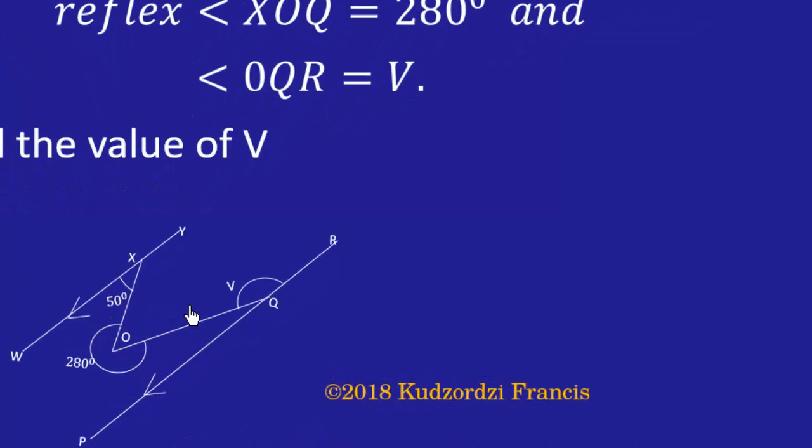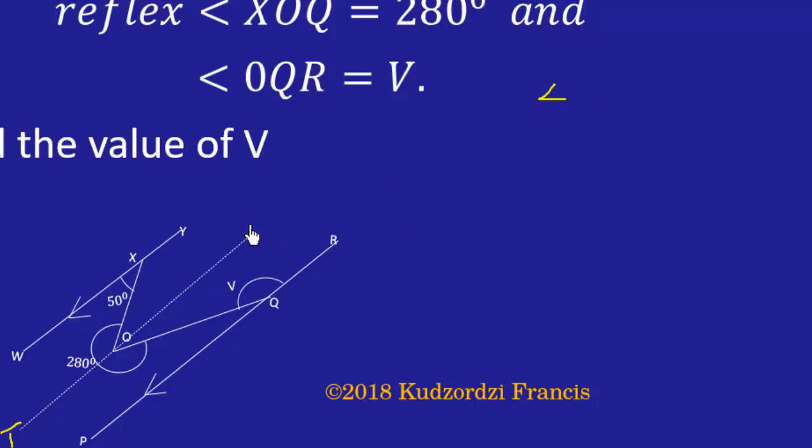So we just draw this line which is parallel to the two. Then we know that the angle over here is co-interior to this, so this angle is 180 minus 50 degrees. So let me call this T and this one Z. So angle XOT equals 180 minus 50.